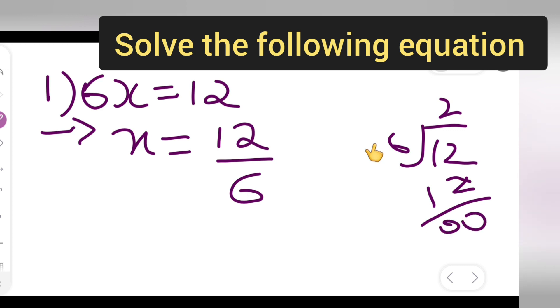So, what is your answer? The value of x will be 2, right? Because when you do 12 upon 6, so 6 1's are 6, 2's are 12. Okay?